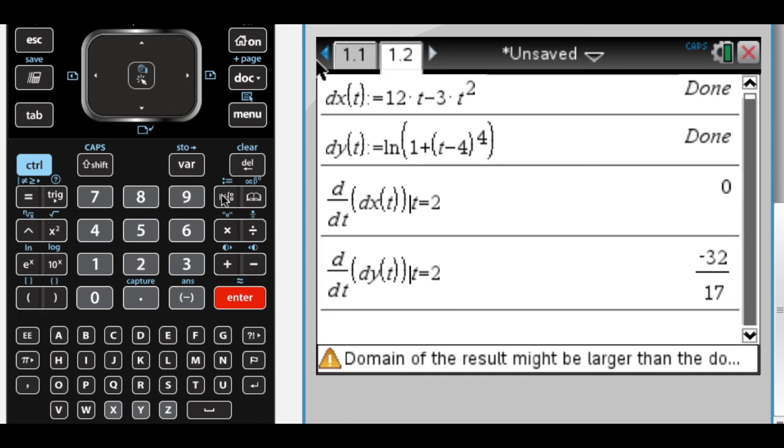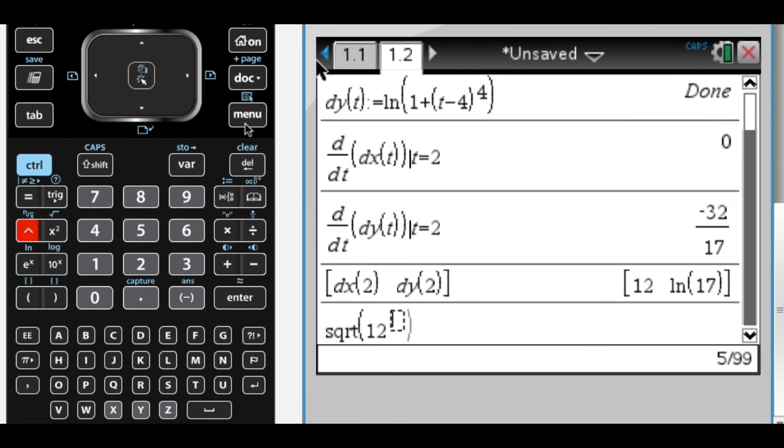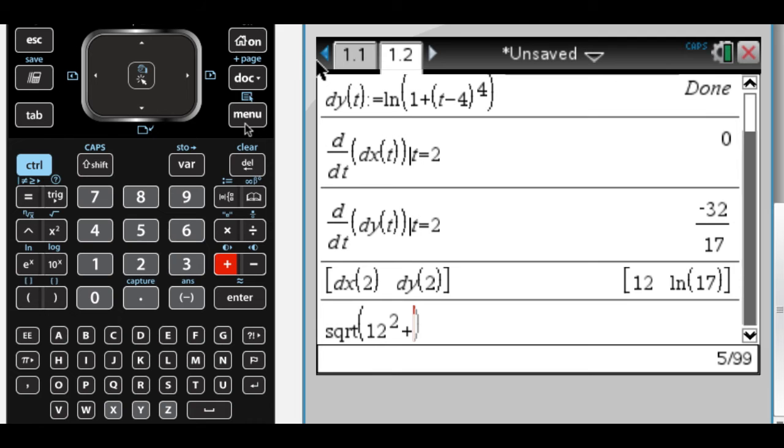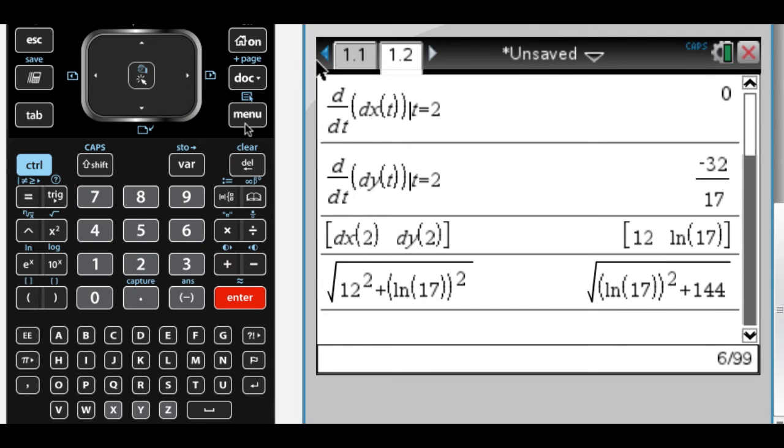I also need the speed at 2, so that's going to be the magnitude of velocity. So let me get a velocity. There's my velocity vector. And what I want is two ways to do this. So I can do the square root of 12 squared plus natural log of 17 squared, which gets me an exact value.